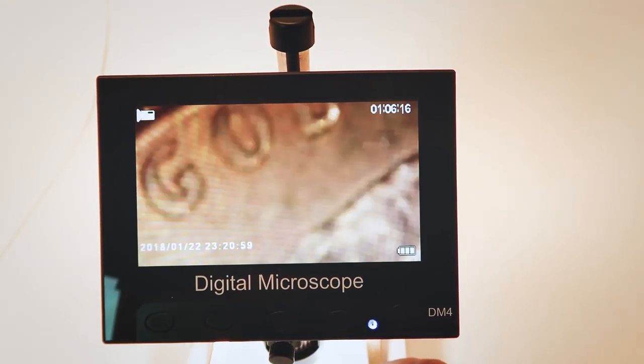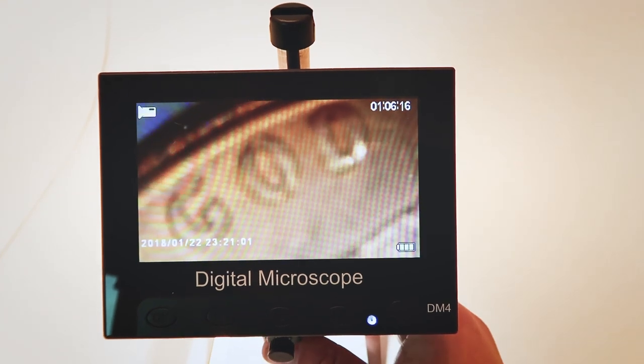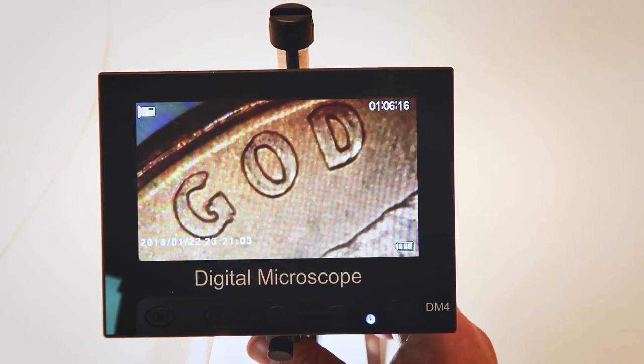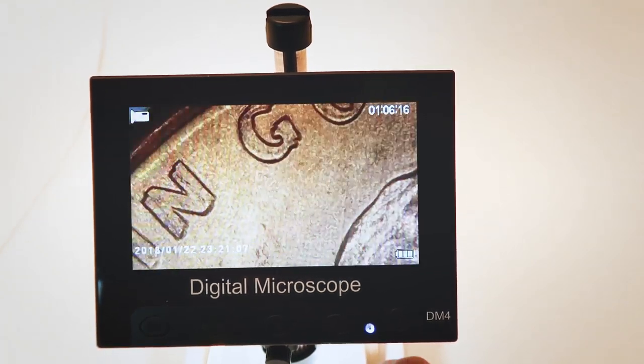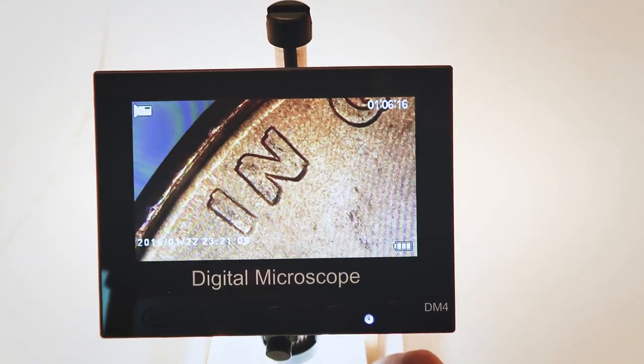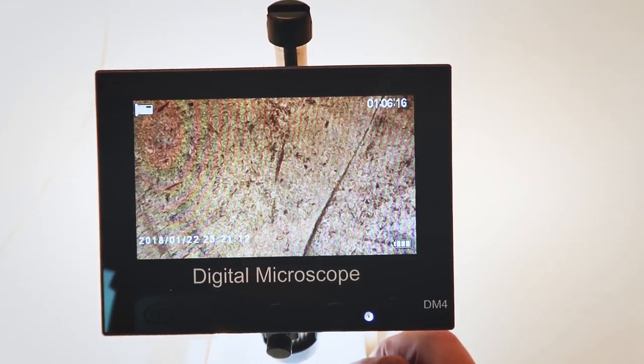And then we will have to refocus as we are closer to the coin. Let's get this underneath here, focus it. Bam, now you see that doubling, very very noticeable doubling there. Now let's look at the liberty again.